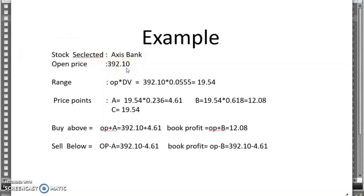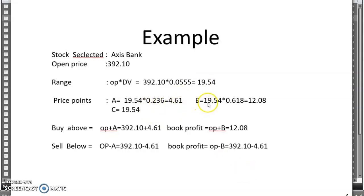This is the Axis Bank example. As per the NSE site, the daily volatility is 0.0555. Open price multiplied by daily volatility equals one standard deviation — 19.54 rupees. A = range × 0.236 = 4 rupees 61 paisa. B = range × 0.618 = 12 rupees 8 paisa. C = the full volatility range. If the price is above opening price plus A (4 rupees 61 paisa), we buy and book profit at open price plus B (12 rupees 8 paisa). If it goes down, sell below and book profit there.